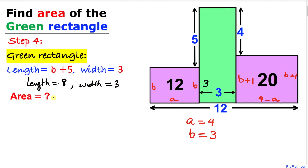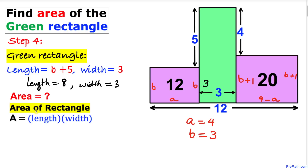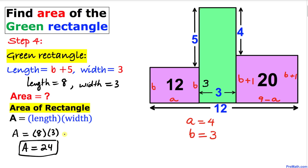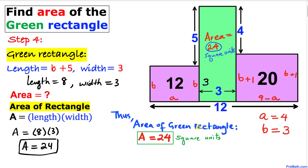For the final step, let's calculate the area of the green rectangle using the formula: area equals length times width. So the area is 8 times 3, which gives us 24 square units. That's the area of the green rectangle — 24 square units. Thanks for watching, and please don't forget to subscribe to my channel for more exciting videos!